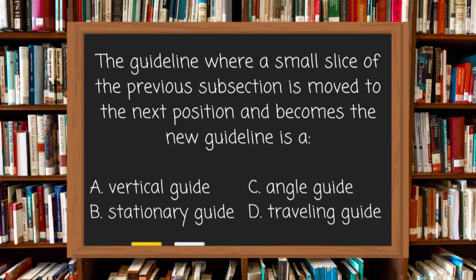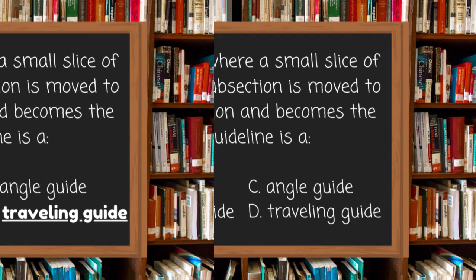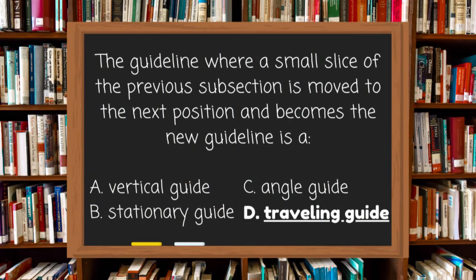The guideline where a small slice of the previous subsection is moved to the next position and becomes the new guideline is: A. Vertical guide, B. Stationary guide, C. Angle guide, or D. Traveling guide. The answer is D, traveling guide. Any guide that moves is a traveling guide.